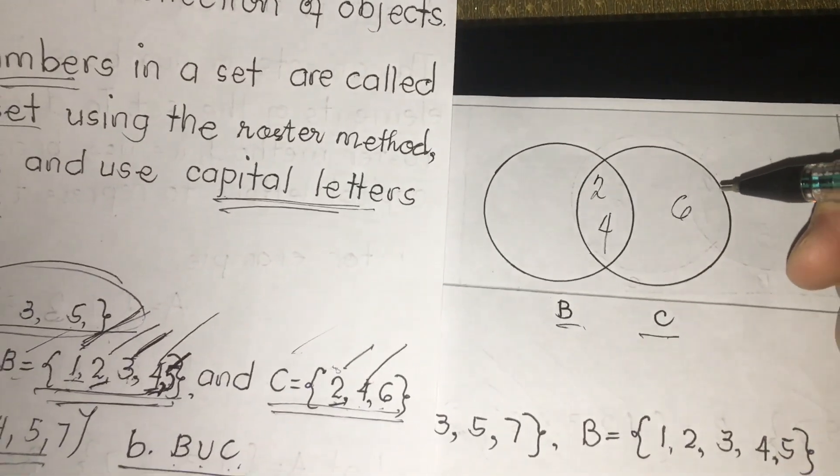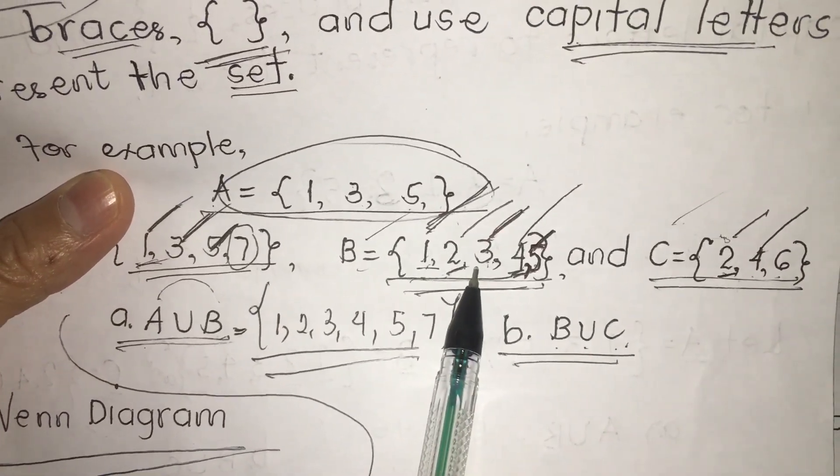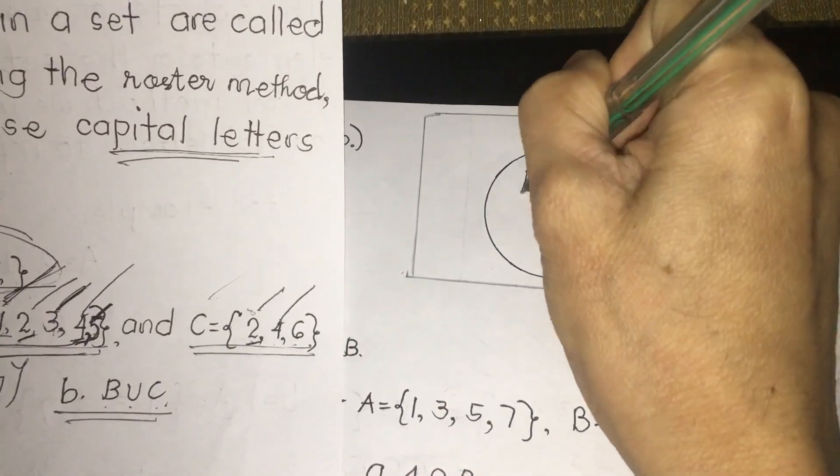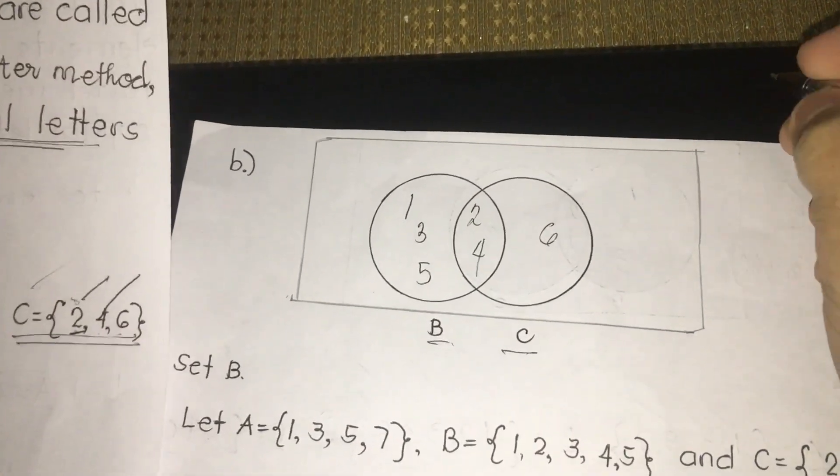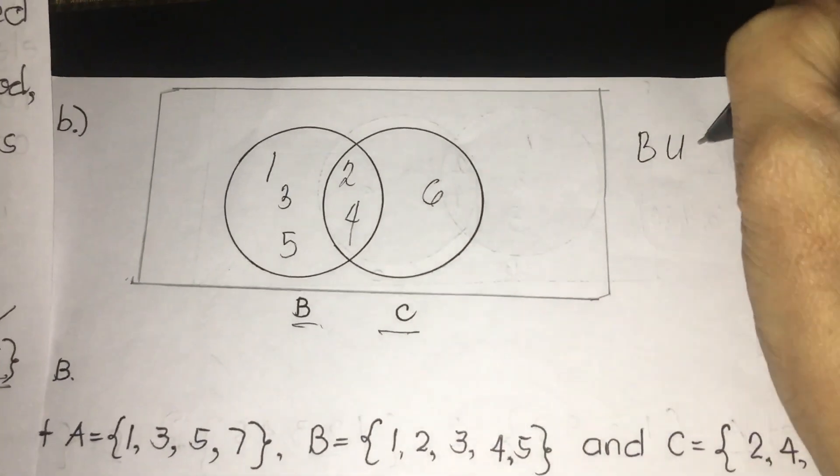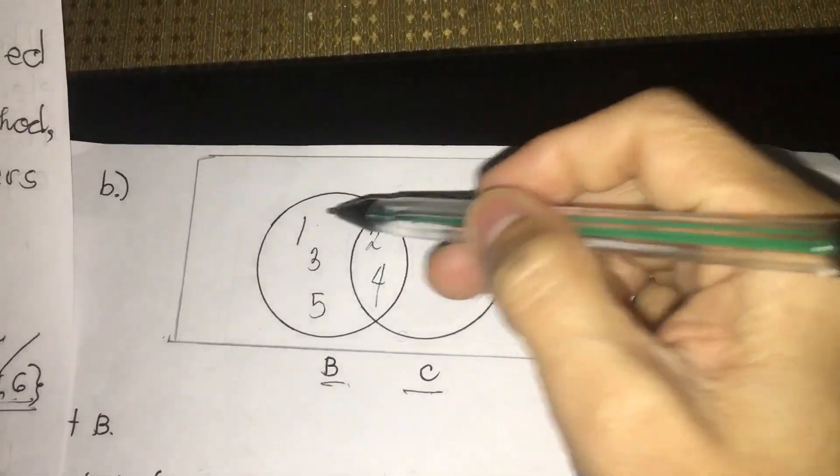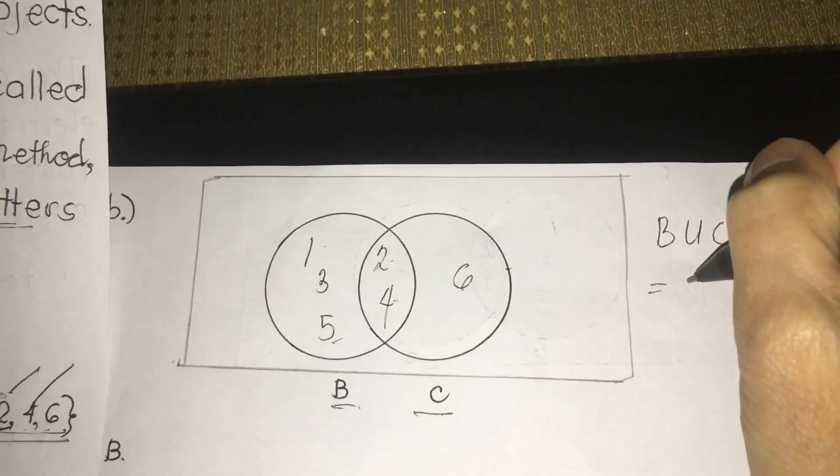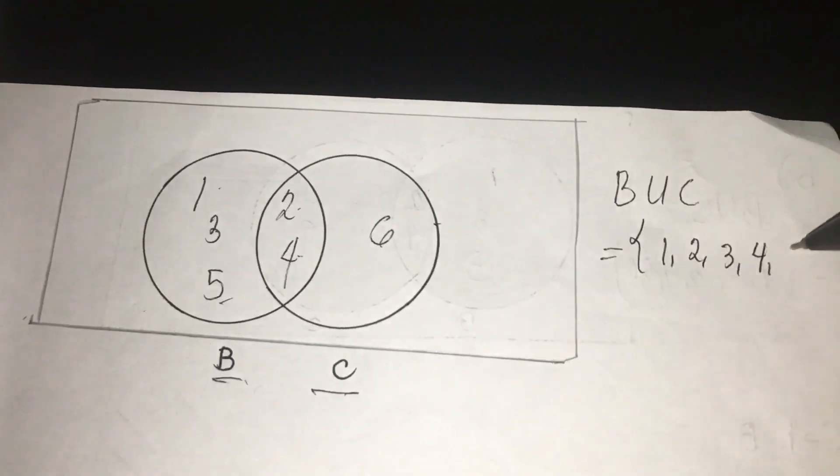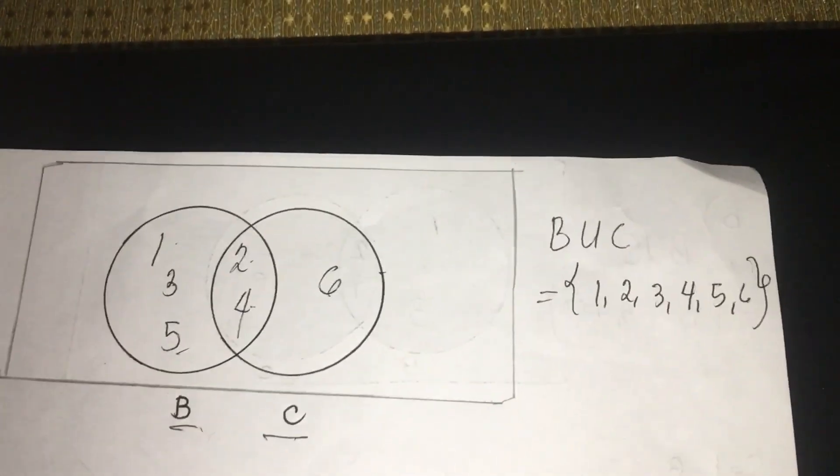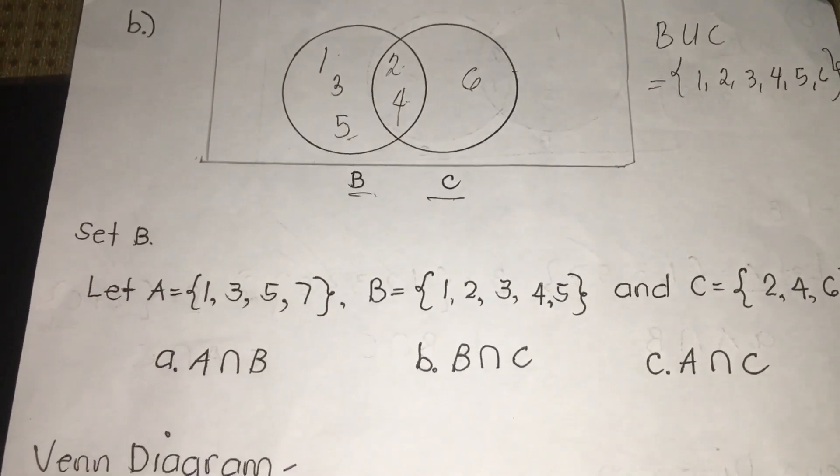In C, we have 6 only left. In B, we have 1, 3, and 5. So, therefore, in B union of C, we're going to write 1, 2, 3, 4, 5, 6. Don't forget to use your braces. 1, 2, 3, 4, 5, 6. Excuse me, we have a cough and cold today. Sorry, viewers.